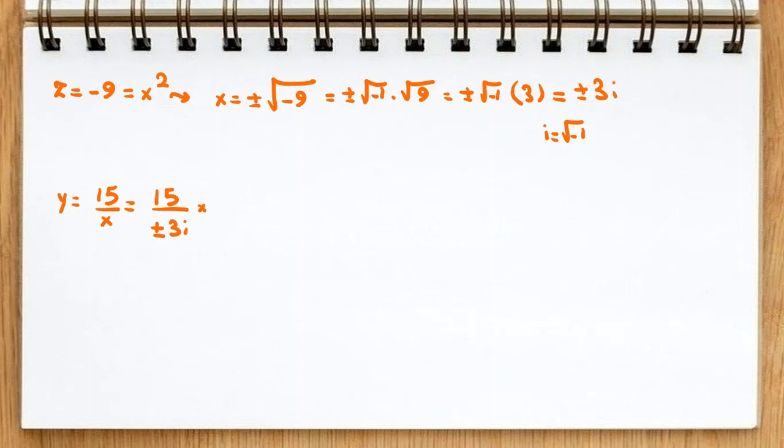y is 15 over x, is 15 over plus minus 3i. Okay, and if you multiply by i over i here, it will be 15i. Because i squared is negative 1, because of this.